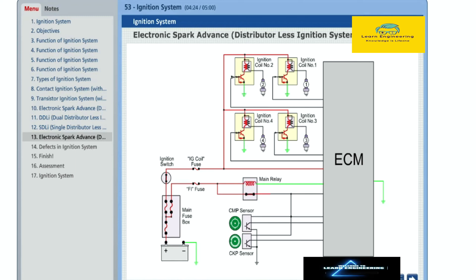ECM uses signals from camshaft position or CMP sensor and crankshaft position or CKP sensor to identify the cylinder which is in compression stroke and the crank angle. After this, the ECM adjusts initial ignition timing and optimum ignition advance.